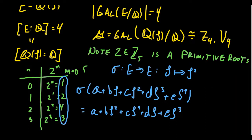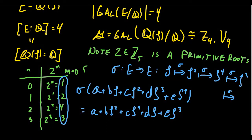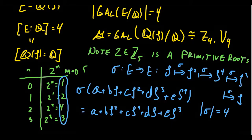If you apply sigma once, zeta goes to zeta squared. Apply sigma again, zeta squared goes to zeta to the 4th. Apply sigma again, you get zeta cubed. One more time, you end up back at zeta. Since knowing where zeta goes determines everything, this shows that sigma is a field automorphism of order 4—it takes four iterations to produce the identity map—establishing that the Galois group is cyclic of order 4.